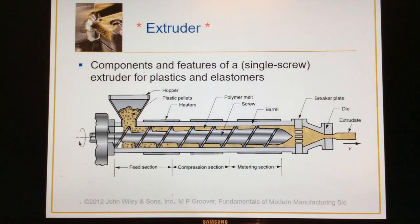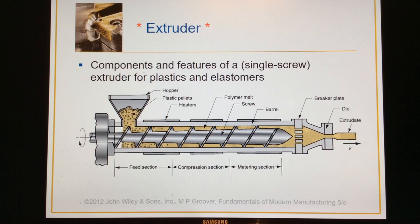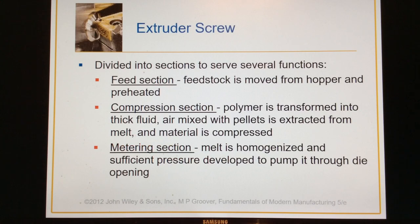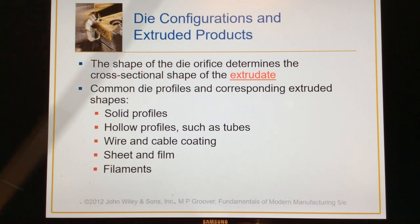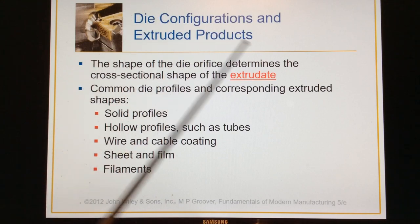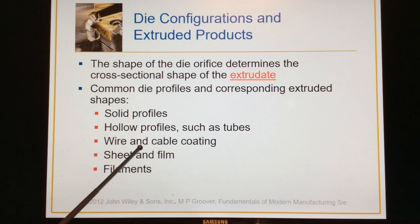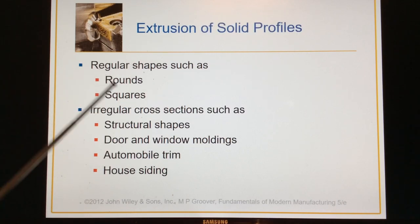We talked about extrusion — here's the full color picture of what we went over last week; we went through that quite extensively. We talked about the different sections: the feed section, compression section, and metering section. The actual product coming out of an extruder is called the extrudate. You can do solid profiles, hollow profiles, wire and cable coatings, sheets and films, and filaments. Round, square, structural shapes — all kinds of different cross-sectional shapes can be done through extrusion, just like with metals.